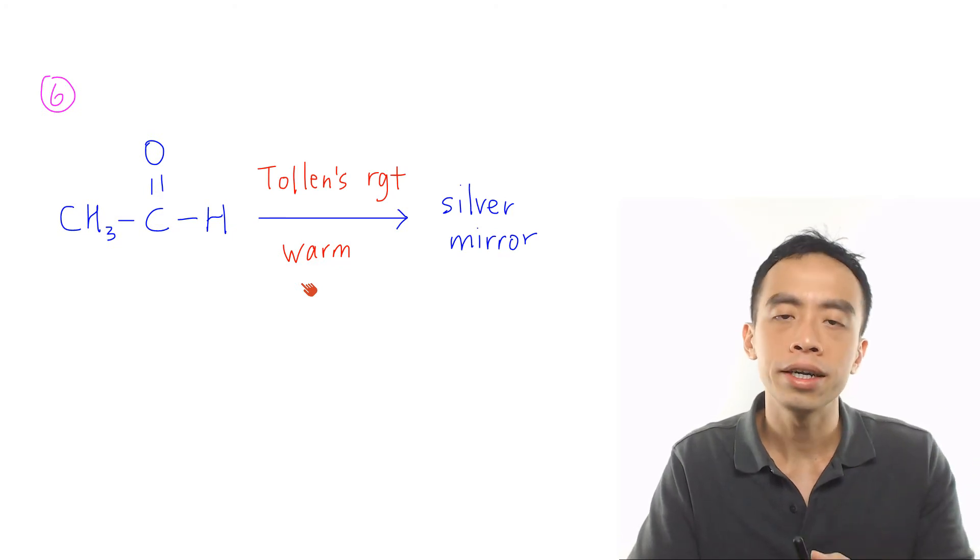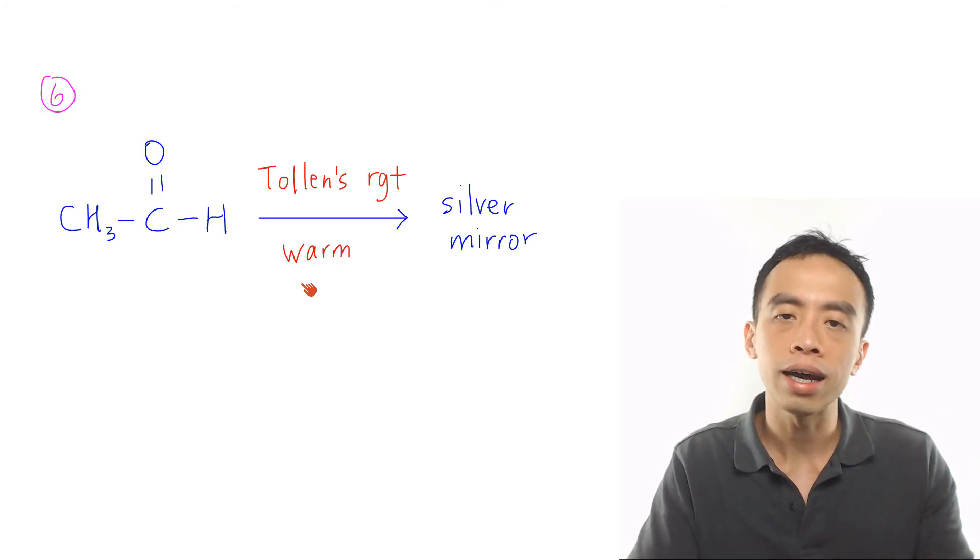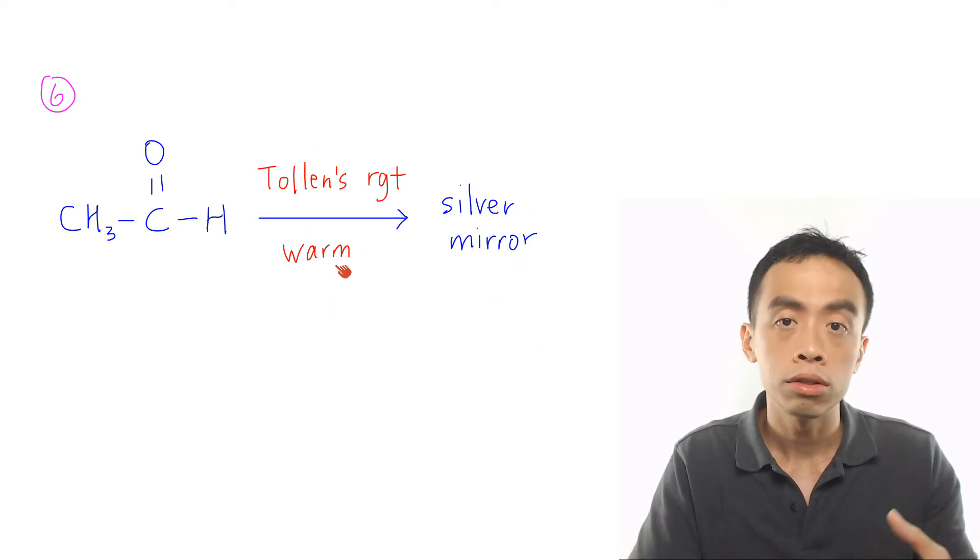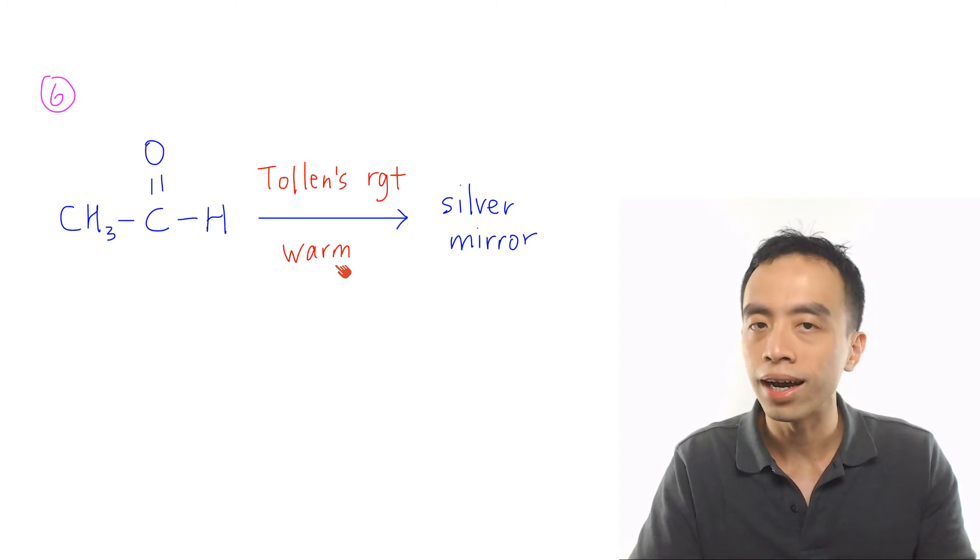Must-know reaction number 6 again is the oxidation of aldehyde under alkaline condition to give us silver mirror. This is done using Tollens reagent warm. This is also a distinguishing test for aldehyde functional group.